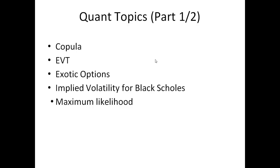Market risk for the FRM Part 2 exam comprises five quantitative topics. Starting with copula, which is more intricate than correlation, then we have the extreme value theorem, a general theorem that goes into things like the Pareto distribution and different kinds of distributions. Then we have around 10-15 exotic options, but without valuation. Then we have volatility smiles, which comes from implied volatility for Black-Scholes, and finally maximum likelihood estimation.